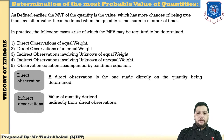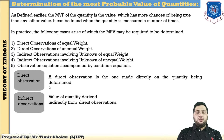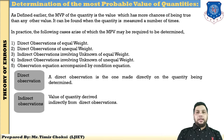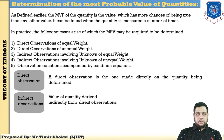A direct observation is one made directly on the quantity being determined. For example, when an observer takes the distance between two points A and B, and measures that distance using a tape or chain — this is called a direct observation. But when the value is derived entirely from direct observations — for example, when finding the angle of a triangulation station using a satellite station due to obstruction — the value derived indirectly from direct observations is called an indirect observation.